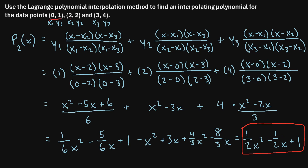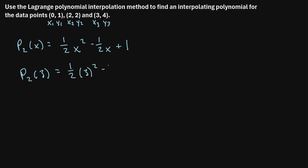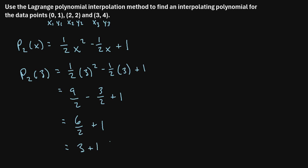This is the polynomial that goes through each of the three original data points. A very easy way to check is to plug in any original x value and see if we get the corresponding y value. For example, plugging in x = 3: P₂(3) = (1/2)(9) − (1/2)(3) + 1 = 9/2 − 3/2 + 1 = 6/2 + 1 = 3 + 1 = 4. Indeed, when we plug in 3 for x, we get 4 as the output.